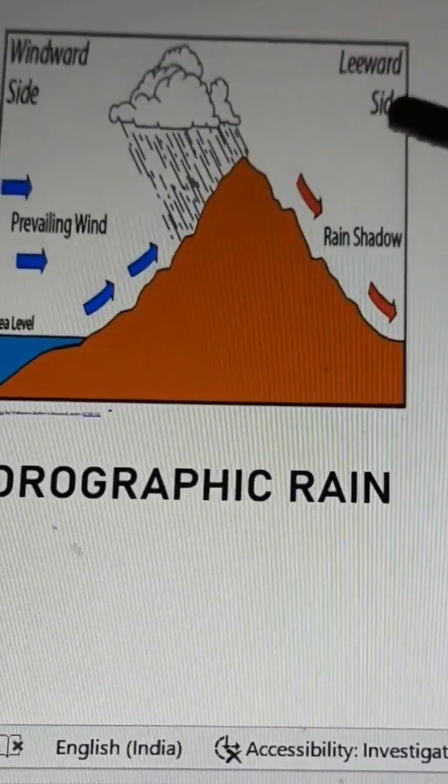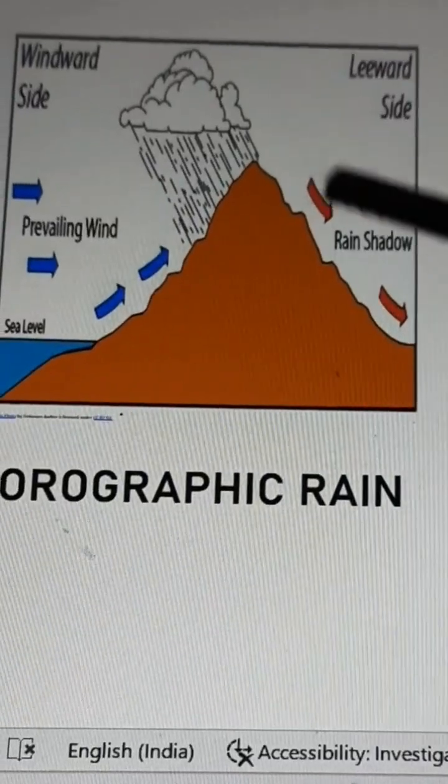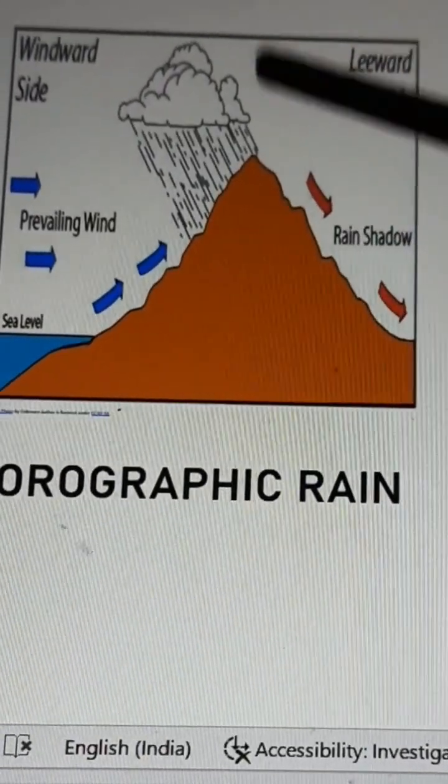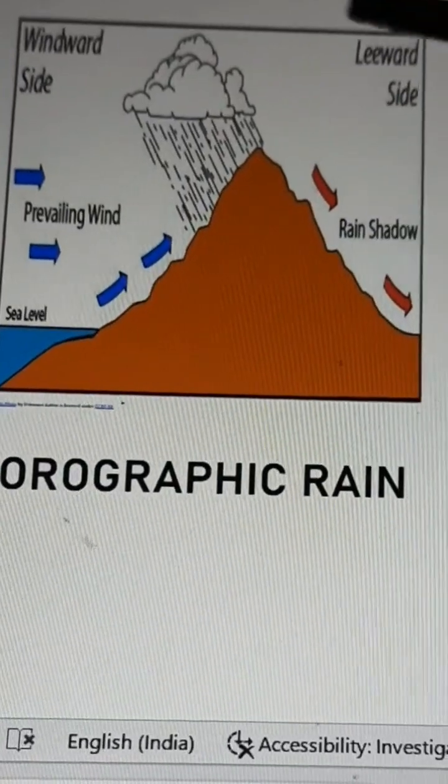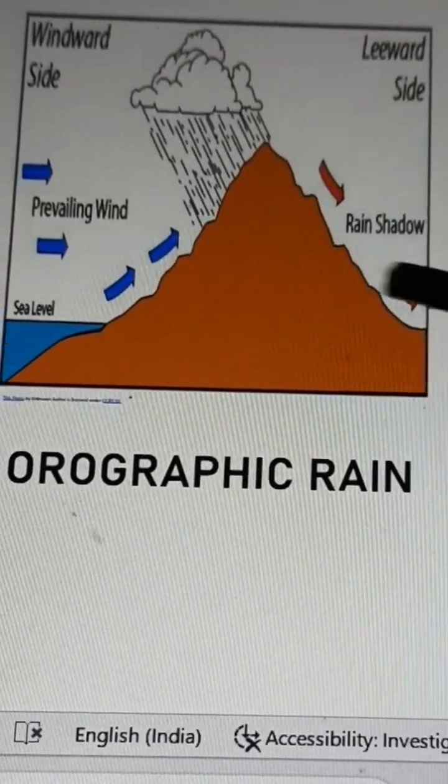After giving a shower here, when the air moves towards the leeward side, it descends because it has lost most of its moisture and starts absorbing moisture. Because of that, there is very little or no rainfall at all in the rain shadow area.